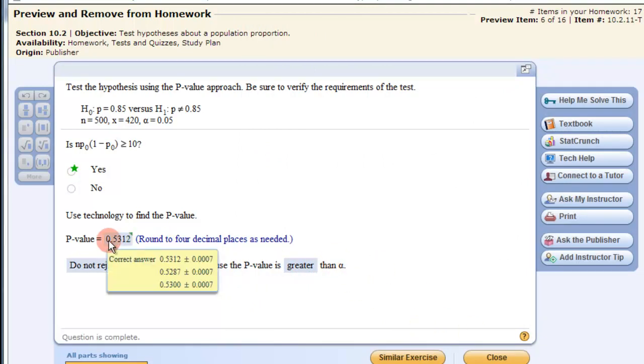We do not reject the null hypothesis because the value is greater than alpha. So remember, if this value is less than this value, then we reject the null hypothesis. But again, here it is greater than this value. So we do not reject the null hypothesis because the p-value is greater than alpha.